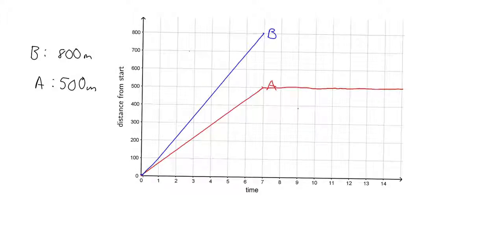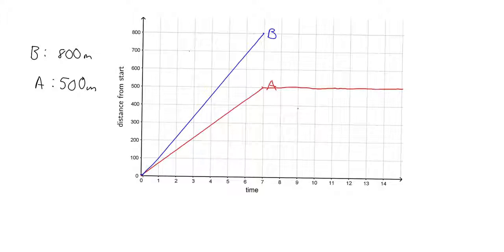You can read off all sorts of information from this graph. I can ask: how far had B walked in one minute? You'd look at B — the blue graph — and after one minute you're right there on the graph, and the distance value is 100 meters. I could also ask that question the other way: how long did it take B to walk 100 meters? In which case you'd find 100 meters on the graph, come back down, and read the time off as one minute. There's plenty of information you can read off a graph.